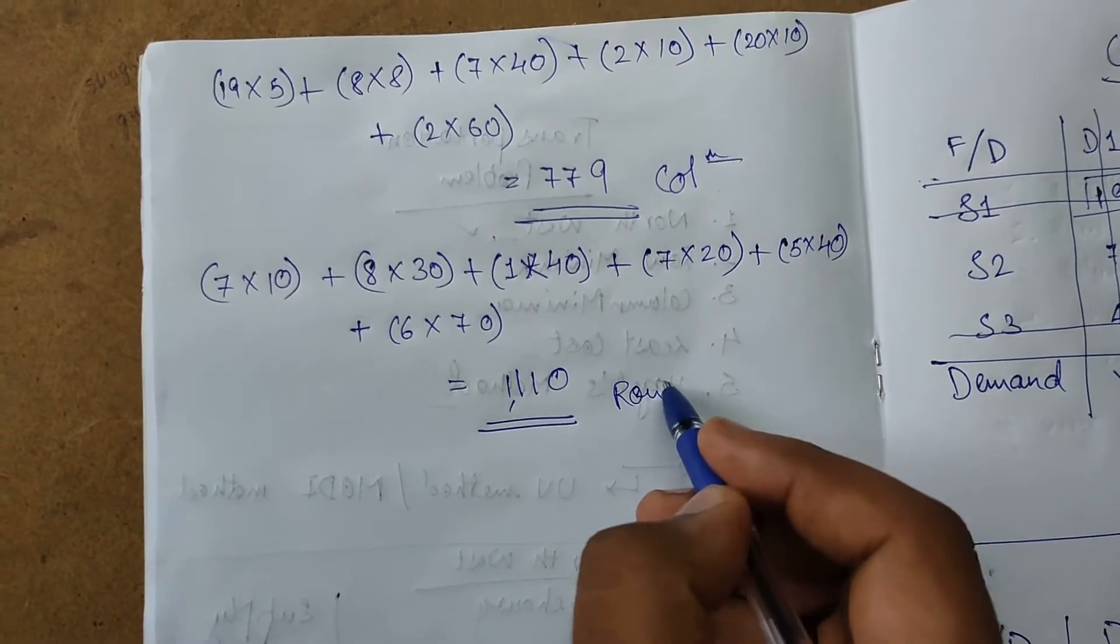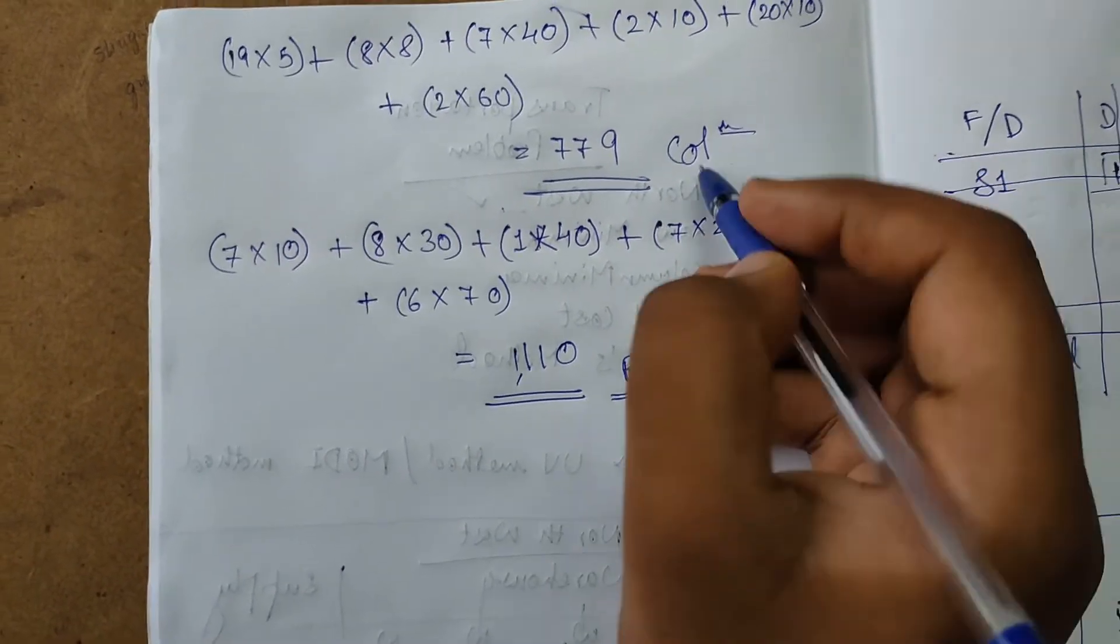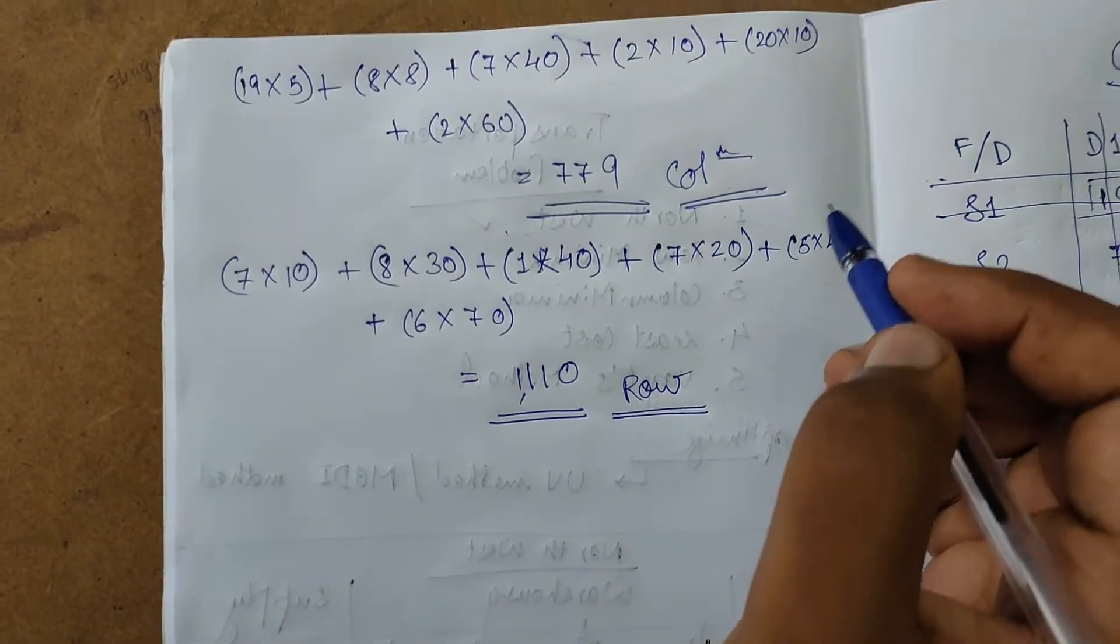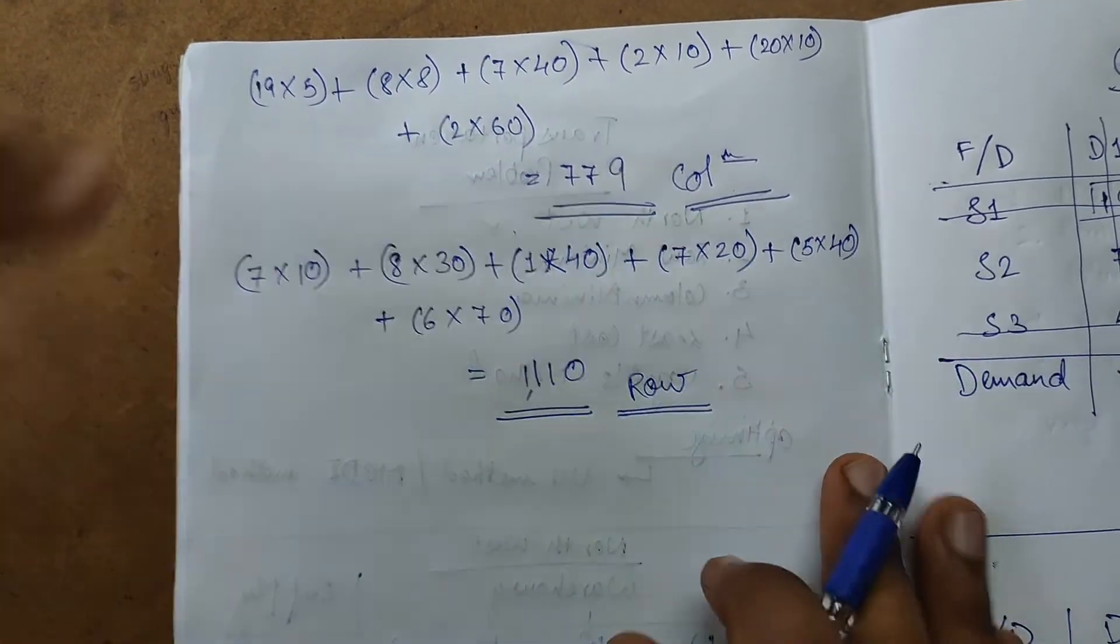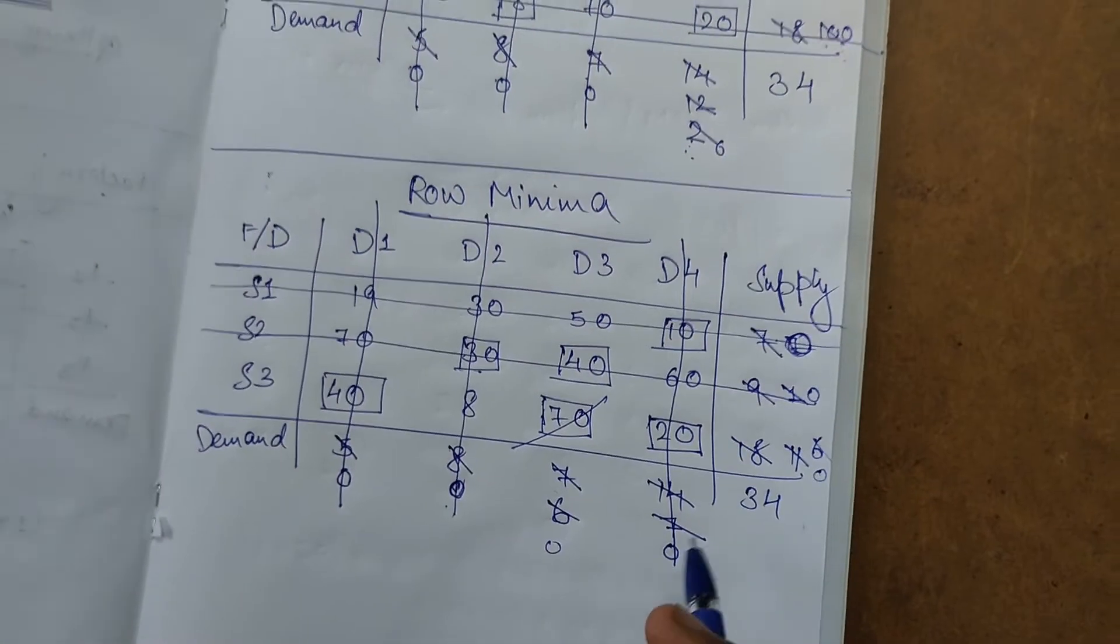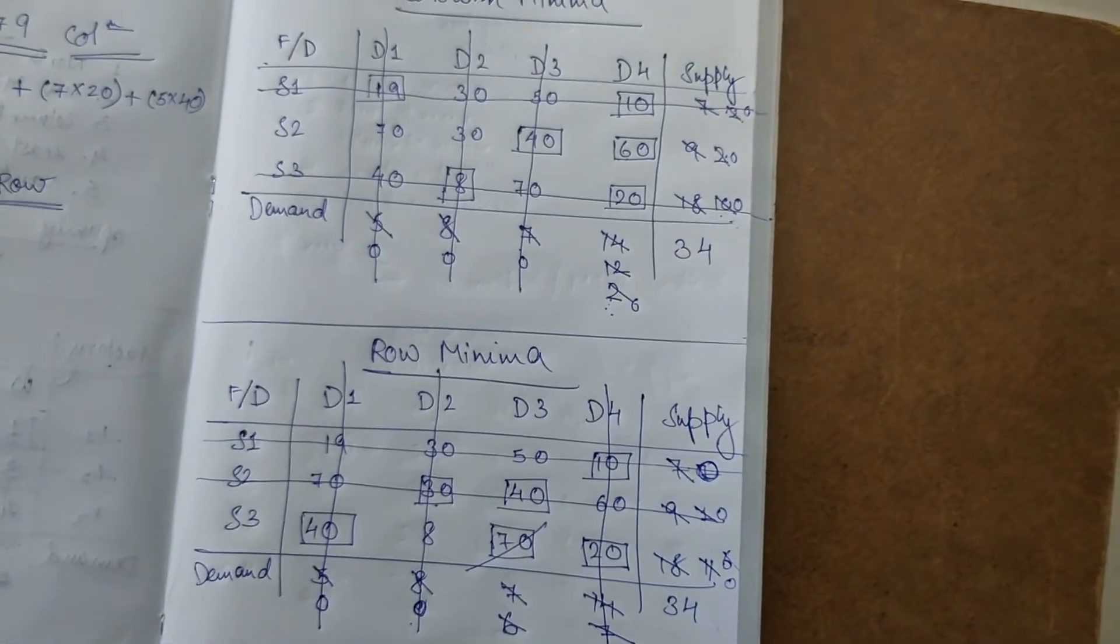This is the solution when you used column minimum method, and this is the solution when you used row minimum method. This proves that different methods have different minimized or optimized solutions. This was all about row minimum method. Hope you got this, thank you.